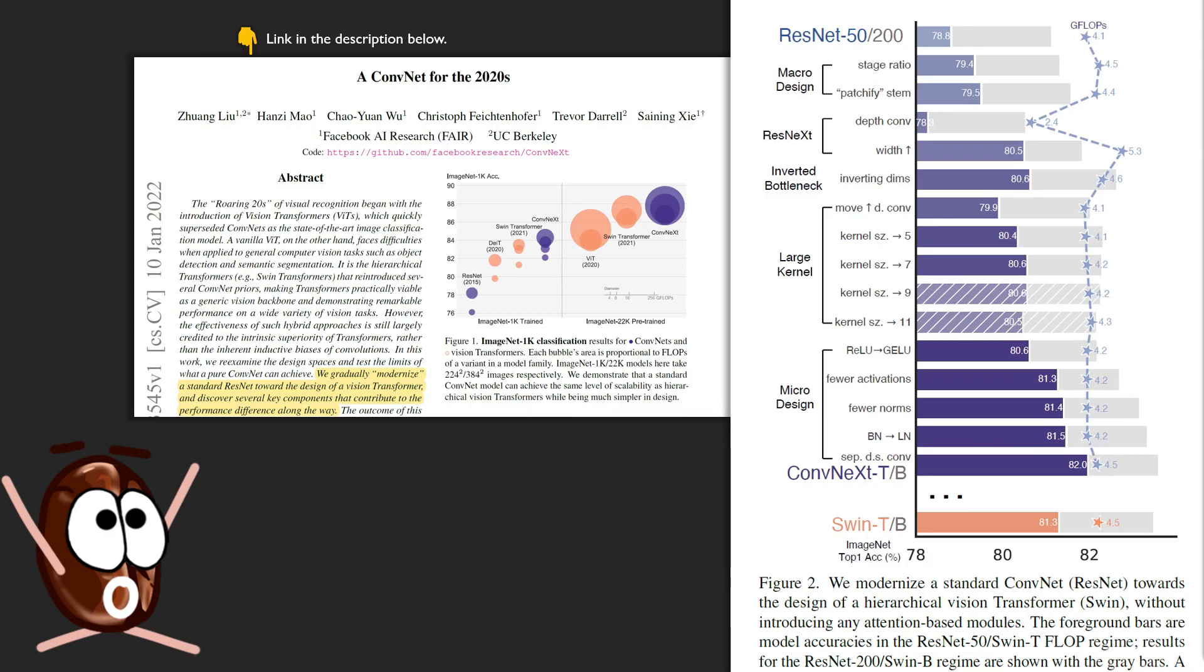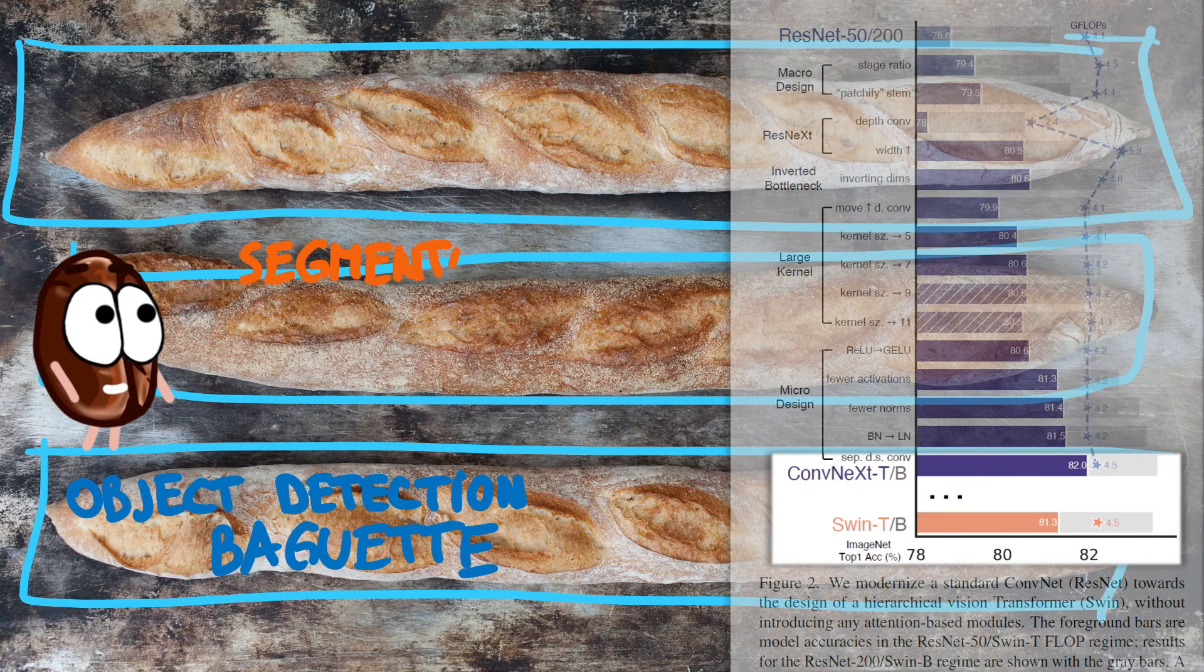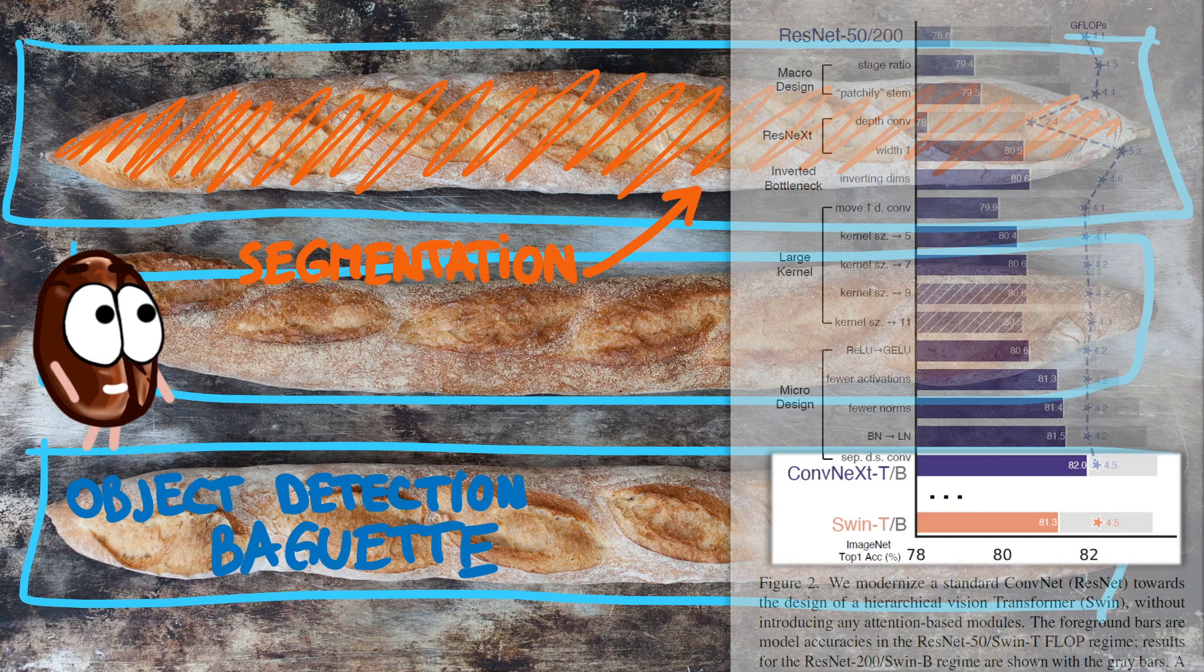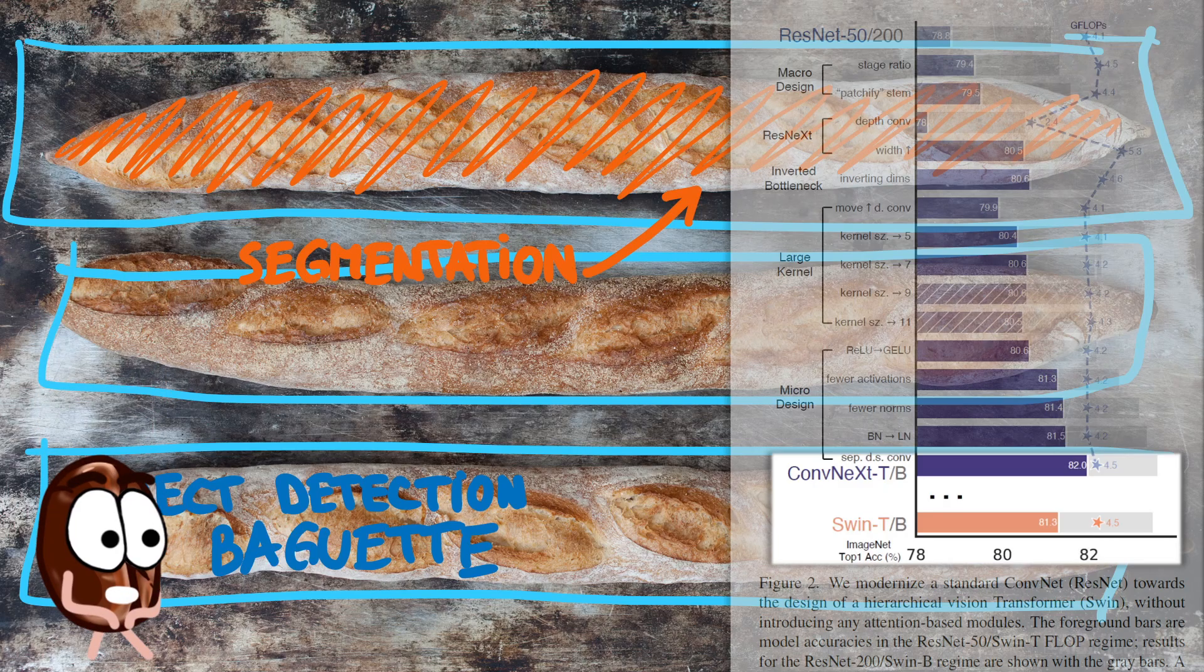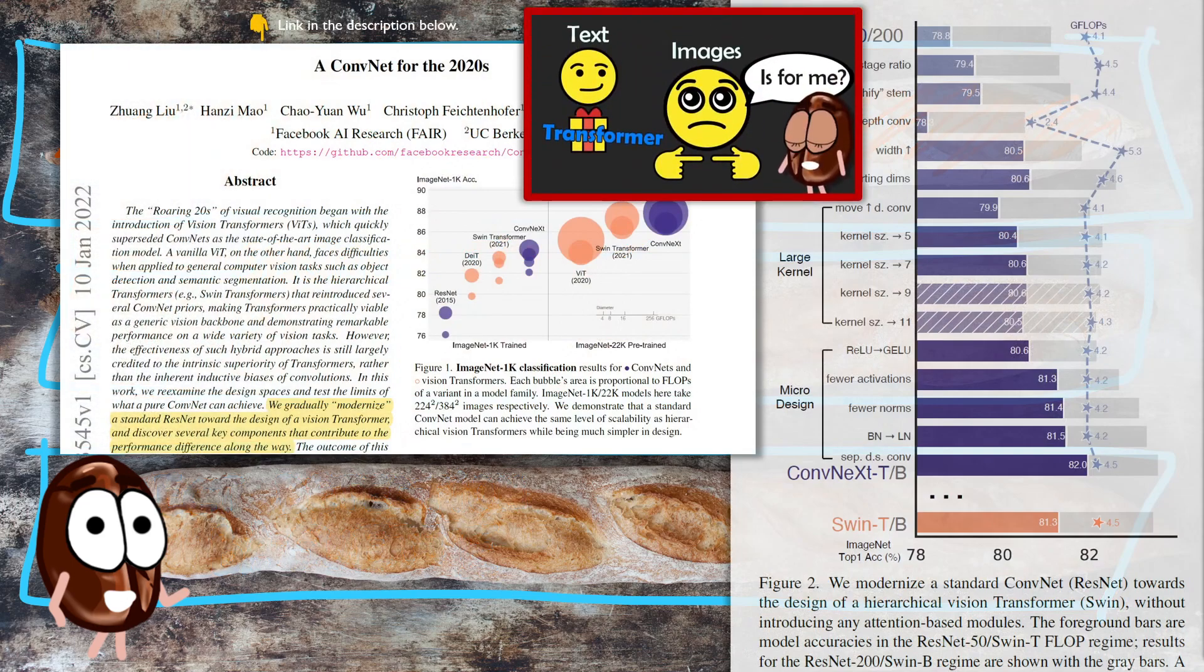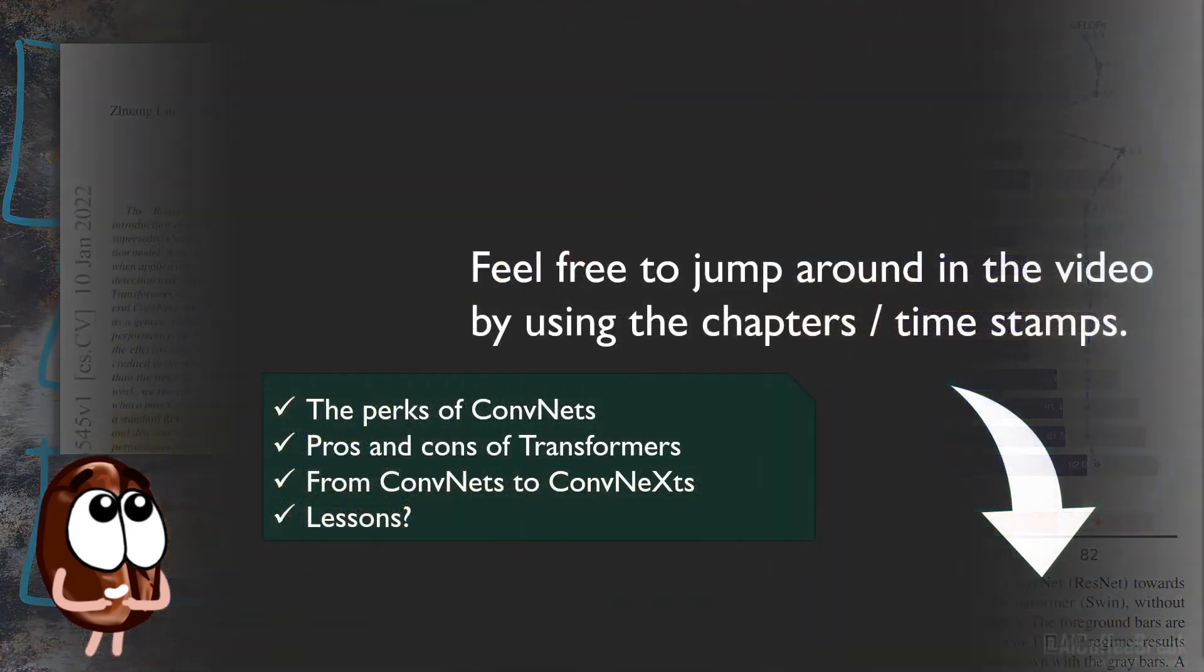And ConvNets are competitive with transformers, not only in image classification, but also on object detection and image segmentation, where the SWIN transformer had its reign so far. Then let's follow the paper and see. What is it that ConvNets have that is so precious and we should keep it even in the era where transformers take over everything? Which steps do the authors take to modernize ConvNets into ConvNext? And what are the associated performance gains? What can we learn from all of this?